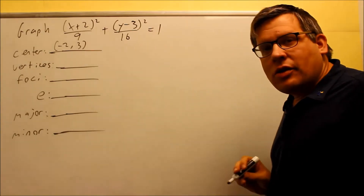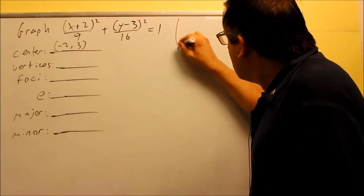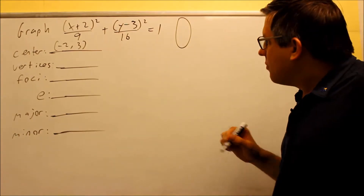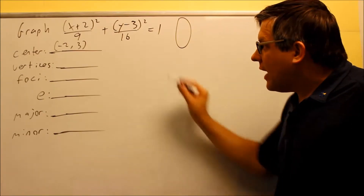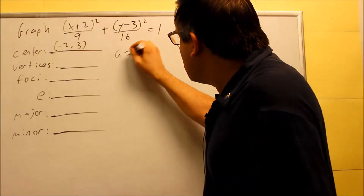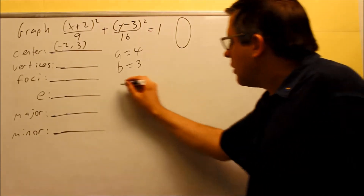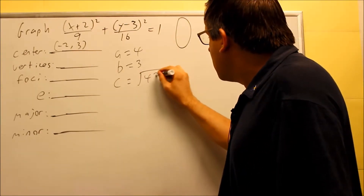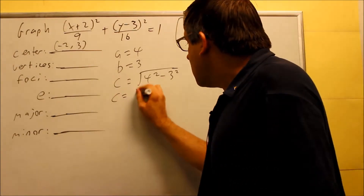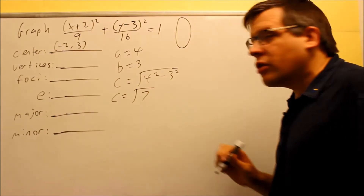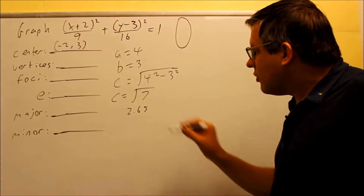Now we find a, b, and c. The larger number is underneath the y, which means the ellipse opens up and down. The a is always the square root of the larger number: a equals the square root of 16, which is 4. b equals the square root of 9, which is 3. Using the formula c squared equals a squared minus b squared: c equals the square root of 16 minus 9, which is the square root of 7, approximately 2.65.